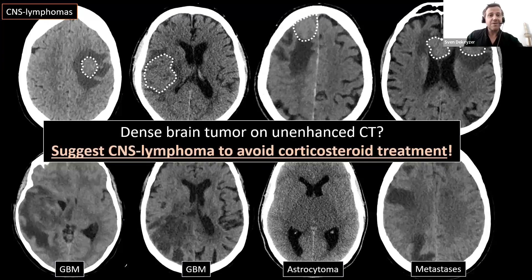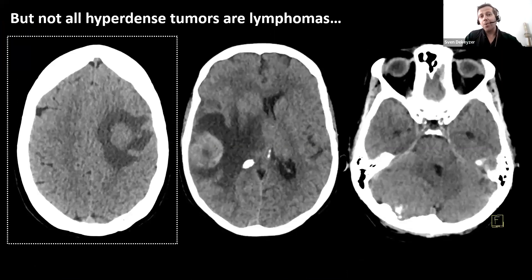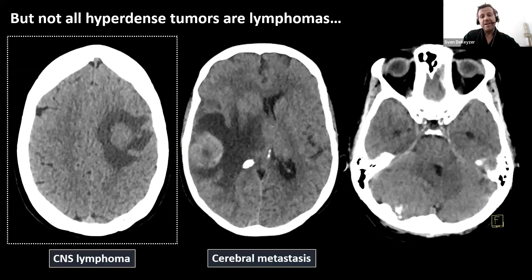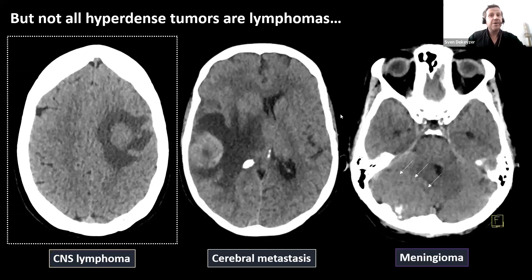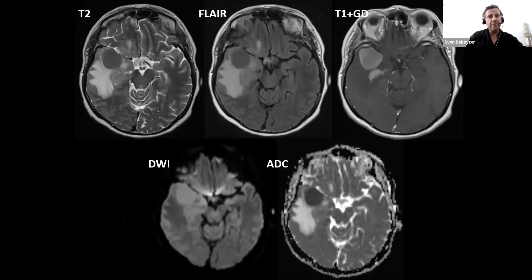Not all dense tumors are lymphomas — you can still have hemorrhagic metastasis that are dense on CT. An unenhanced CT is not diagnostic, but if you see a dense tumor, you should suggest the possibility of CNS lymphoma. After that, the patient will receive an MRI.